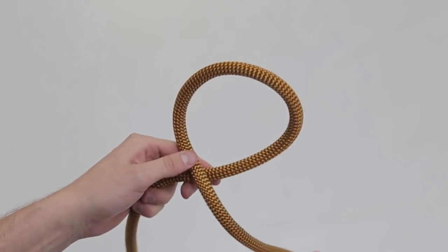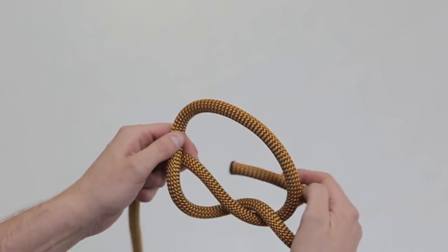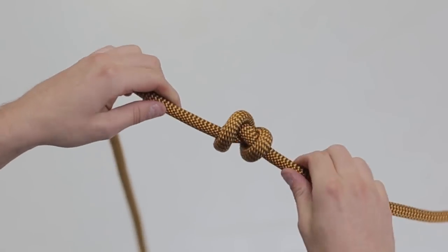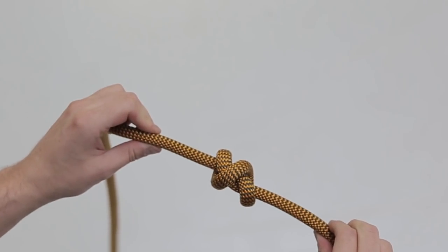Form a loop in the rope. Pass the end of the rope through it. Repeat and pass the end through the loop again a second time. Tighten the knot to make a secure stopper knot.